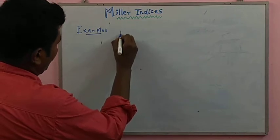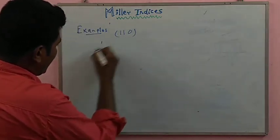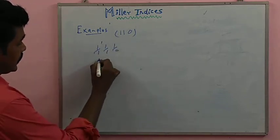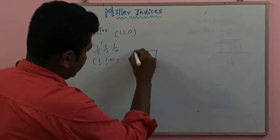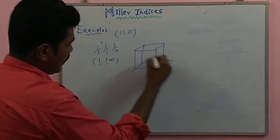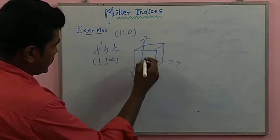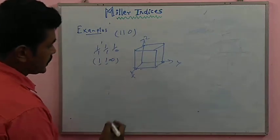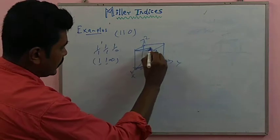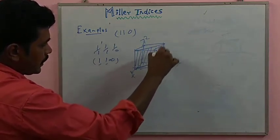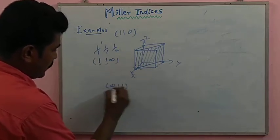Another example: the (1 1 0) plane. The reciprocals are 1/1, 1/1, 1/0, giving values 1, 1, and infinity. So x and y are each at maximum one unit, while z is infinity. Join the opposite points and shade the particular portion — this is the (1 1 0) plane.